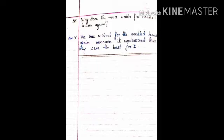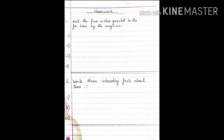Children, please do your notebook work as it is shown and don't forget to draw a double line after every question. Children, last but not the least is the homework which is having two questions. First is list the four wishes granted to the tree by the magician. By now, you must know what were the wishes. Kindly do them the way they are shown in the notebook. The next question is write three interesting facts about trees. This you can do taking the help from the internet.